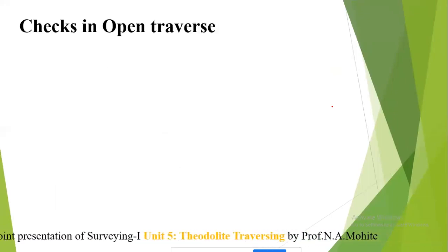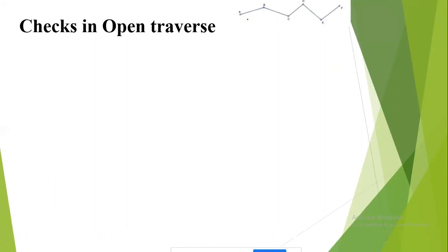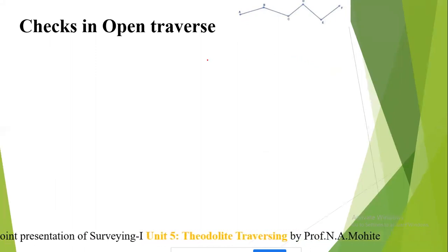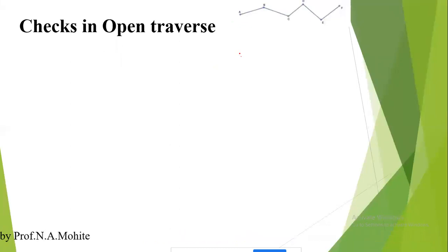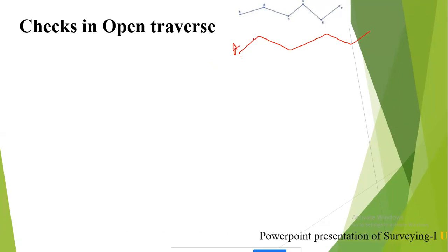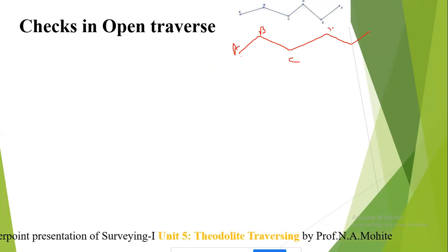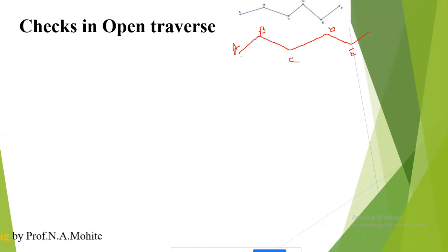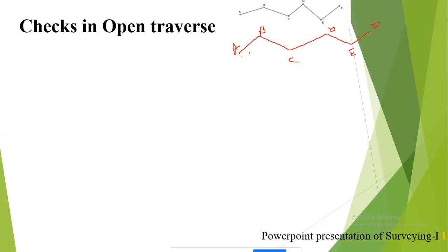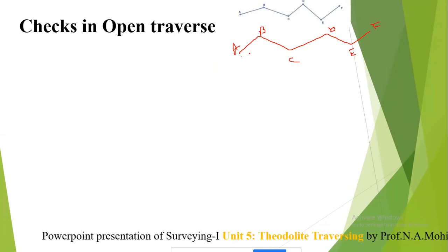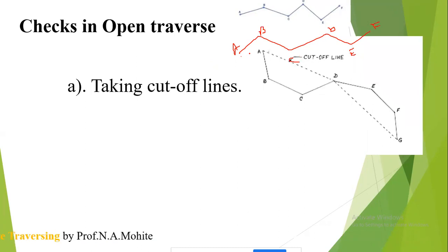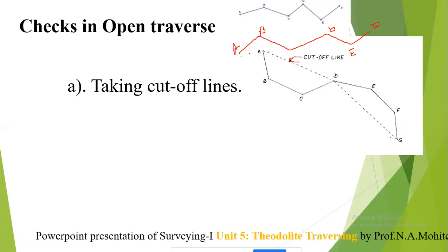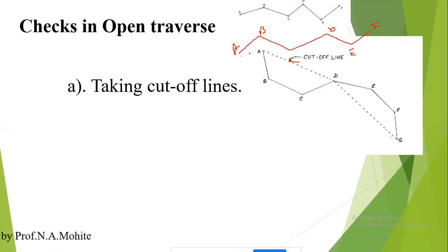Moving to the checks in the open traverse: an open traverse is one in which the starting point and the end point are not the same. These checks cannot be directly measured in the field; however, certain field measures are taken to ensure accuracy and determine errors after plotting. The first method is taking cutoff lines.